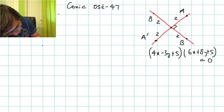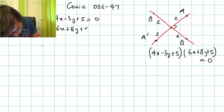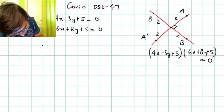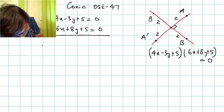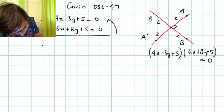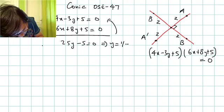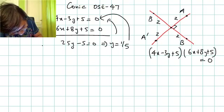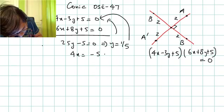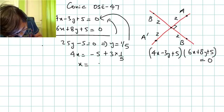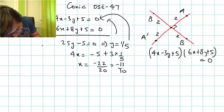First, I'll solve the two lines simultaneously to find their point of intersection. Multiplying and subtracting gives 25y - 5 = 0, so y = 1/5. Substituting back gives 4x = -5 + 3(1/5), so x = -22/20 = -11/10. Therefore, the point of intersection P is (-11/10, 1/5).